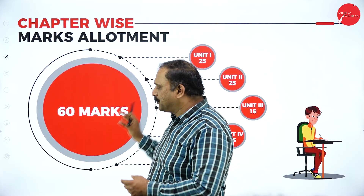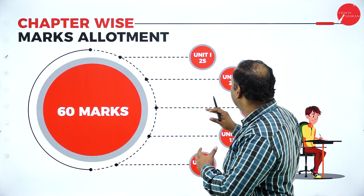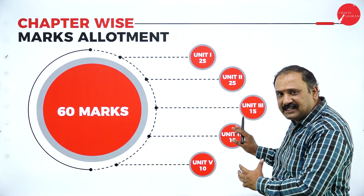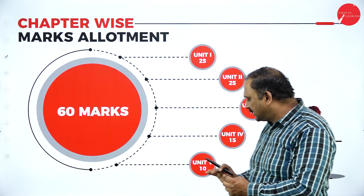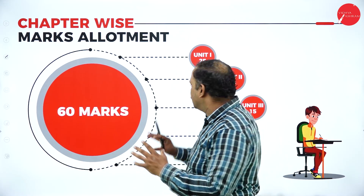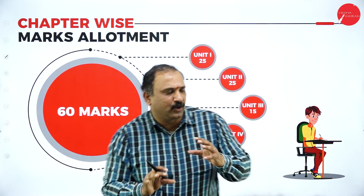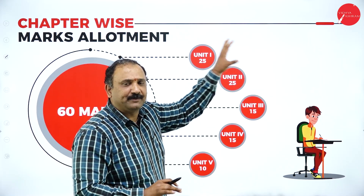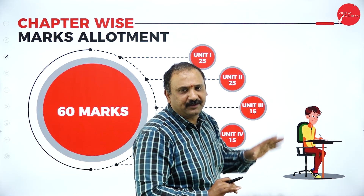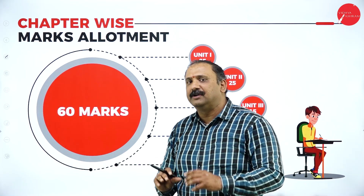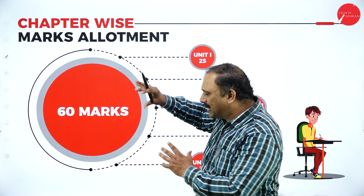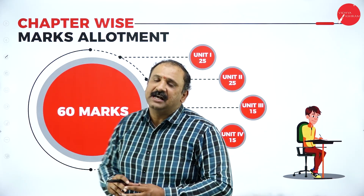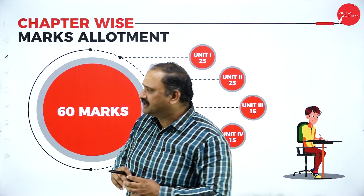The chapter-wise mark allotment shows unit 1 carries 25 marks, unit 2 carries 25 marks, units 3 and 4 are about 15 marks each, and unit 5 is only 10 marks. The first three units cover about 65% of the syllabus, while the last two units comprise about 35%. If you divide and study well, you can cover the syllabus and score well in the final exam.